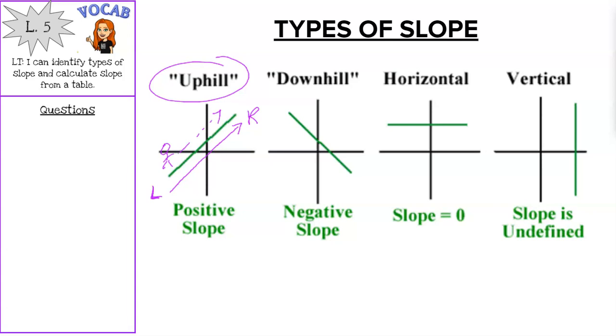Downhill is a negative slope. So if you start at the left-hand side, start yourself there, and you were to walk to the right-hand side, you'd be going down the hill.